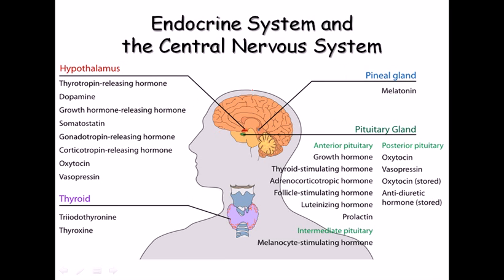The endocrine system and the central nervous system are linked with each other, so hormonal response and neural response are combined to conduct their relationship inside the body. For example, touching something is expressed very rapidly through the nervous system. The hormonal response is much slower but steady and lasts for a long time, whereas the nervous response is very fast but lasts for only a very short time.